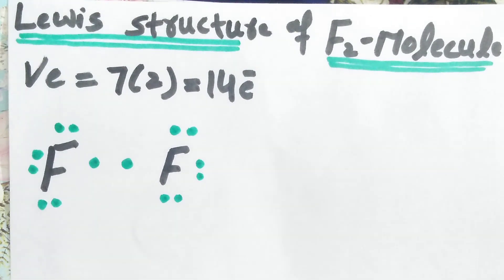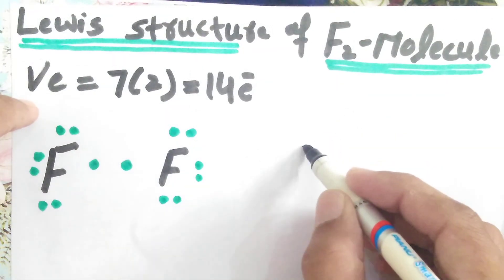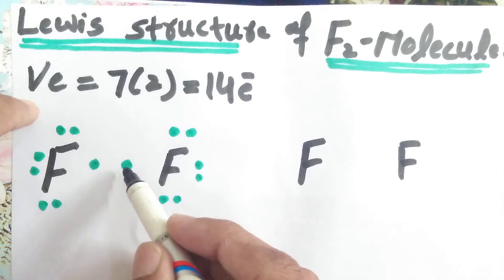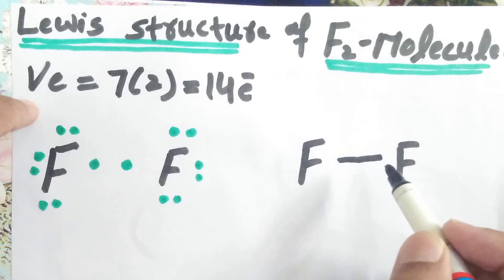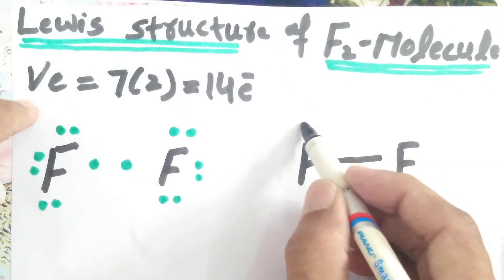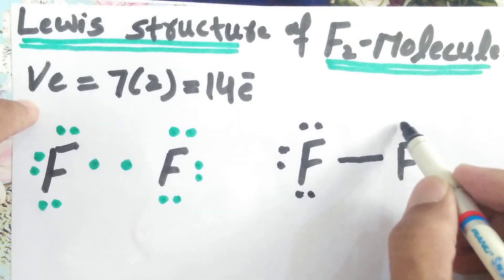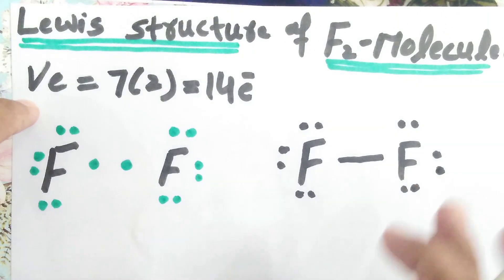Now we represent the single covalent bond in between these two fluorine atoms. One fluorine and other fluorine. This pair of electrons acts as a single covalent bond in between these two fluorine atoms.